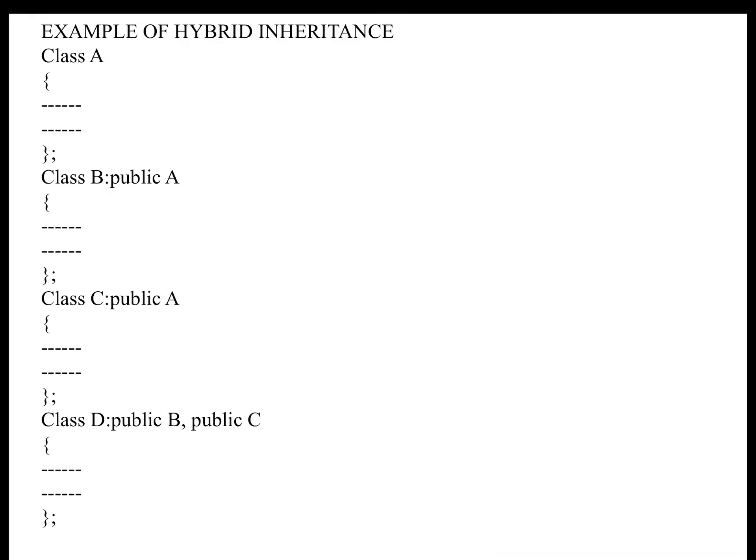Here is a skeleton of Hybrid Inheritance. Class A is a base class. Class B is a derived class. Class C is a derived class. Class D inherits from two derived classes — Public B and Public C. This is the simple skeleton to understand Hybrid Inheritance.